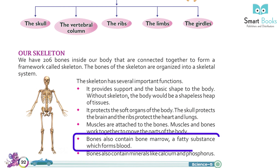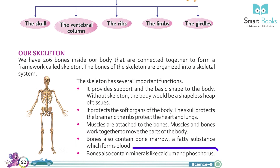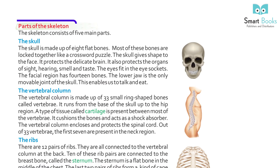Muscles and bones work together to move the parts of the body. Bones also contain bone marrow, a fatty substance which forms blood. Bones also contain minerals like calcium and phosphorus.